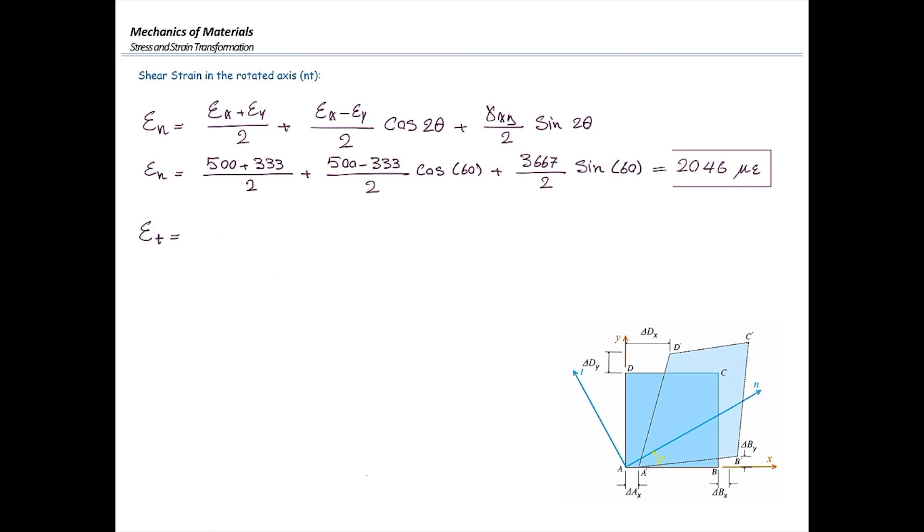Same is true for epsilon T. We are going to use epsilon T transformation equation. After plugging in the numbers, we would get epsilon T is equal to negative 1213 micro epsilon.